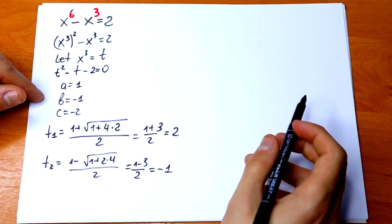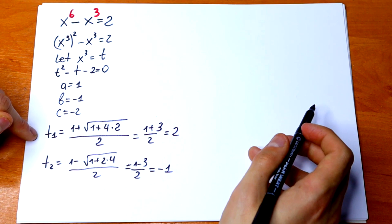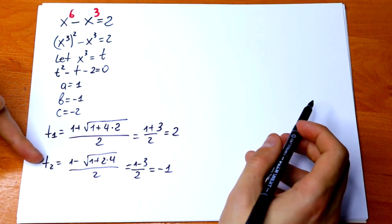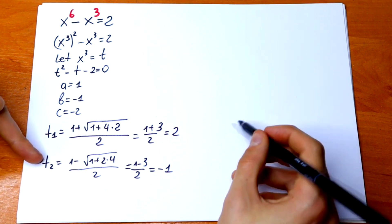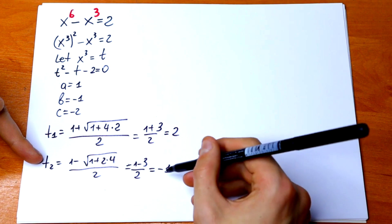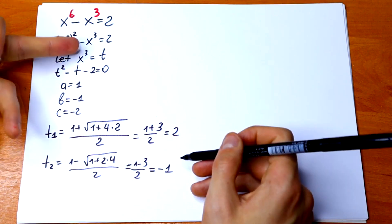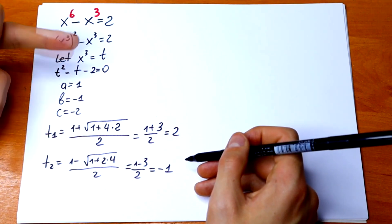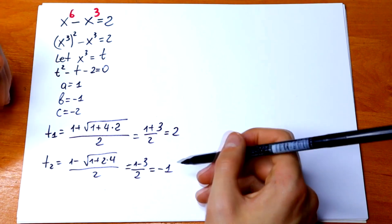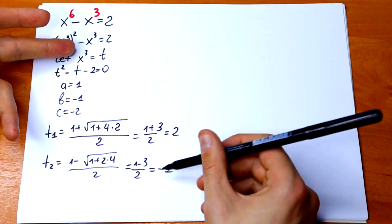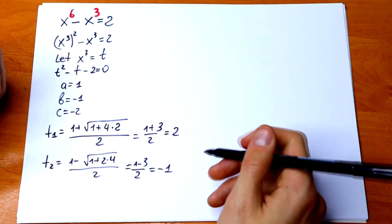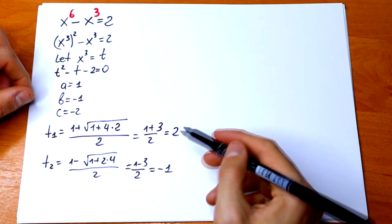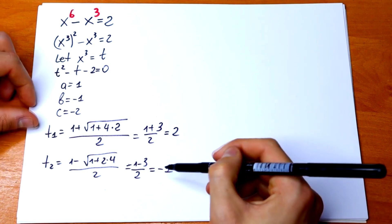So this root is good for us. And what about this root — is it good for us? Yes, this root is good for us as well, because we took the substitution x cube equal to t, and x cube can be equal to minus 1.